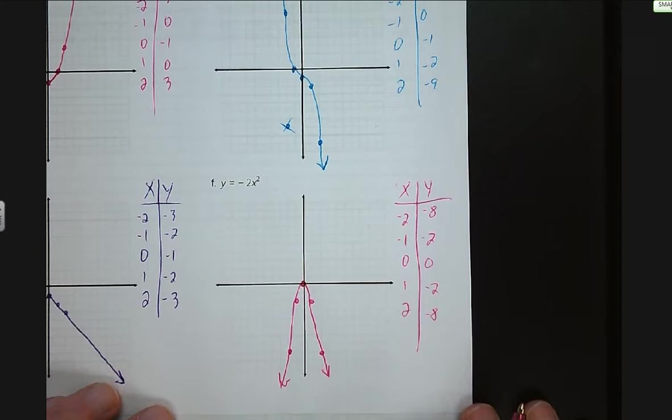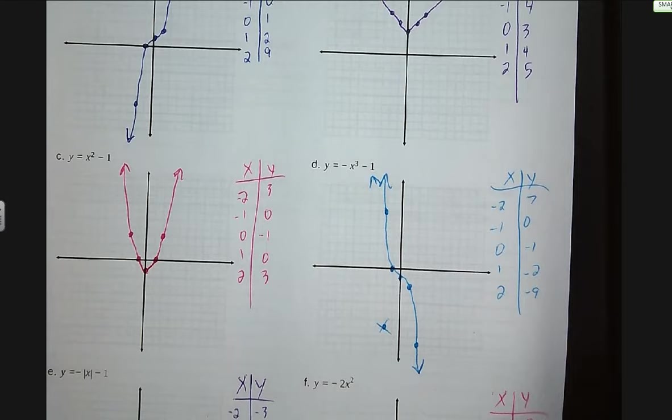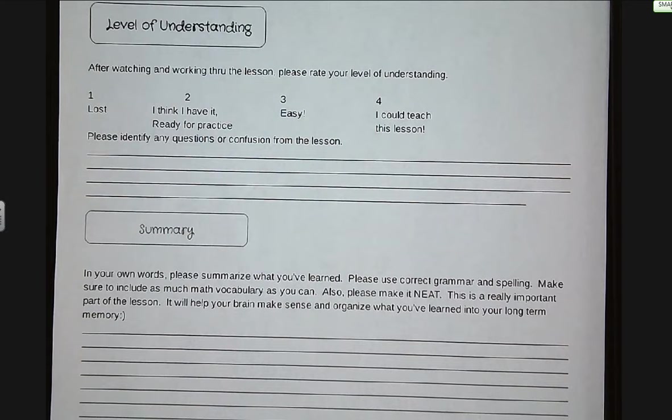That is the end of our graphing lesson for today. Make sure you rate your level of understanding of these problems 1 to 4, and make sure that you write a summary. If you have any questions about this lesson, make sure you list them so we can address those in class tomorrow. Have a great night, and we will see you on Monday.